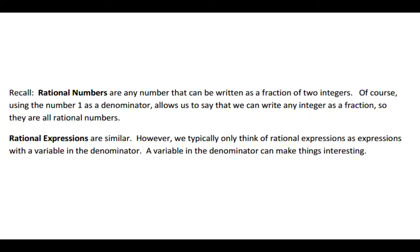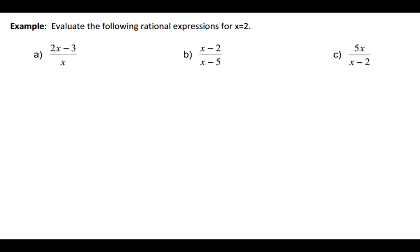Rational numbers are really just like a fraction, two integers, two whole numbers written one over the other. If you think of rational numbers as, well, if one was the denominator, then technically all integers are rational numbers. And that's true. Rational expressions are similar, but only if they have a variable in the denominator. If it's just a one in the denominator, we don't call it a rational expression. A variable in the denominator makes a lot of things interesting about functions.